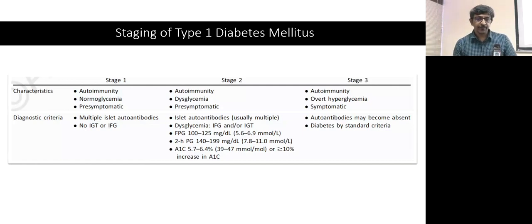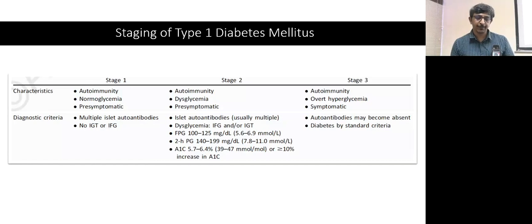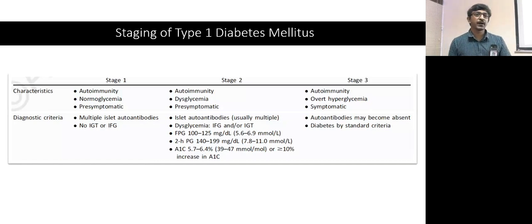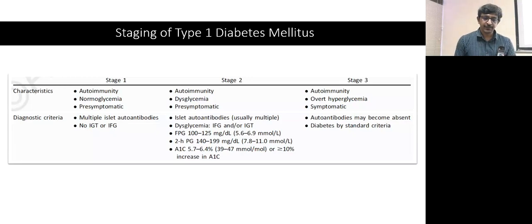In stage 3, the autoantibodies may be absent, but there is overt hyperglycemia and these patients are symptomatic — they are diabetic by standard criteria. So these are the three stages of type 1 diabetes mellitus.